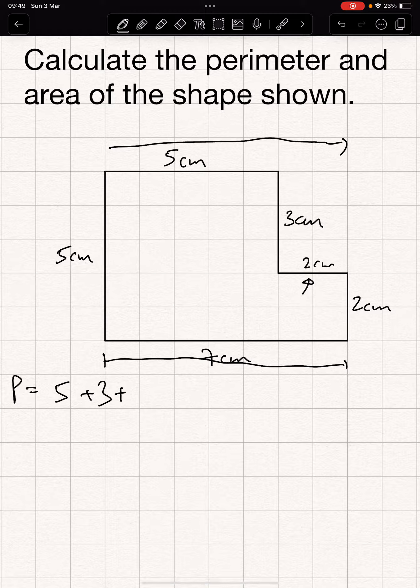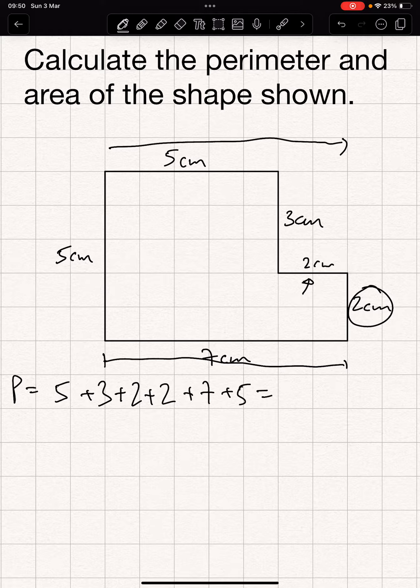So plus 2, plus this 2 here, plus 7, plus 5. Add them together, 5 and 5 is 10, and another 5 here is 15, and 9 gets us up to 24 centimeters.